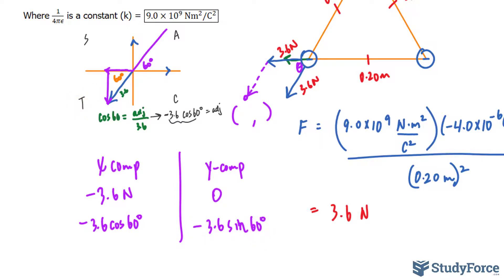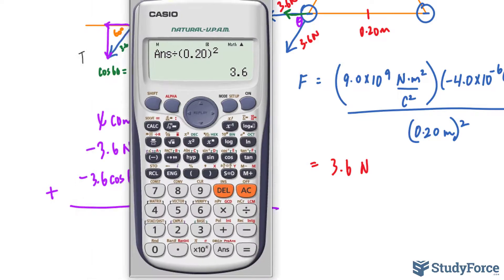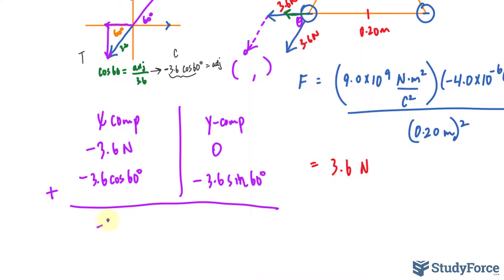This is why understanding vectors is so important when it comes to physics. So now that we have our x and our y components, we will add them up. Let's use our calculator. We have negative 3.6 plus negative 3.6 times cosine 60. And that is equal to negative 5.4 newtons.